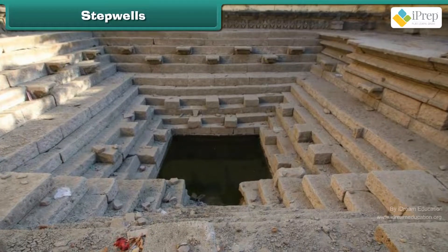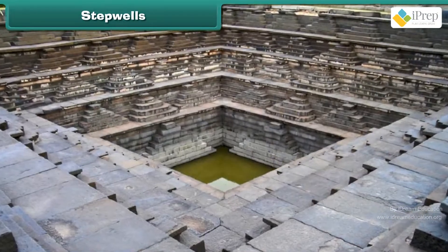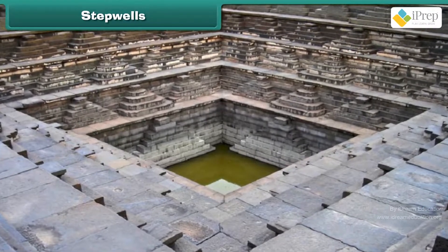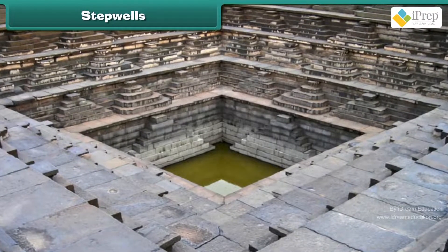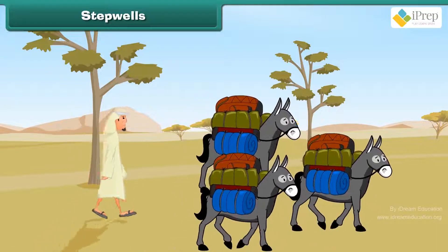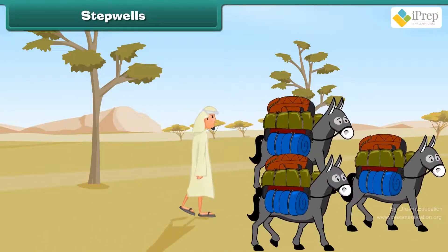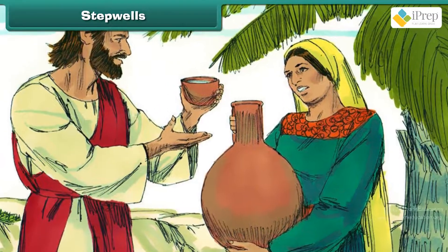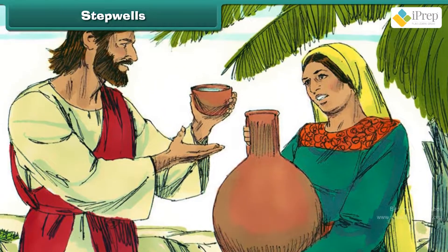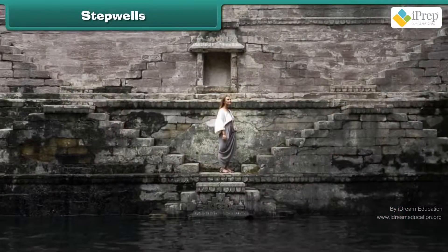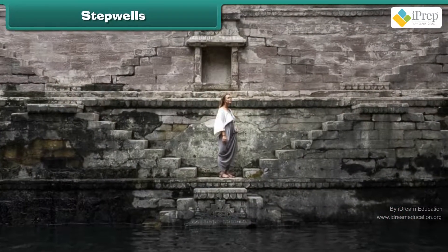A step well is a multi-storied well in which water is reached by descending a set of steps. Long ago, people used to make long journeys with their caravans of animals and goods. People felt it was a good thing to give water to thirsty travellers. Thus, they built many beautiful step wells.